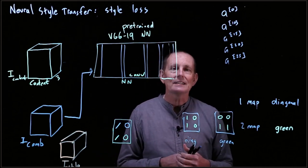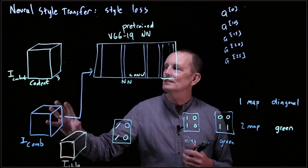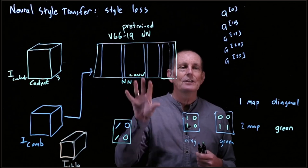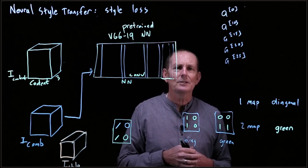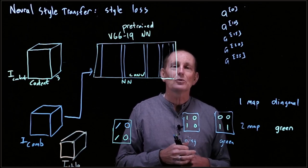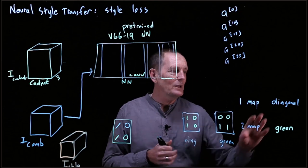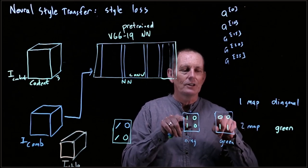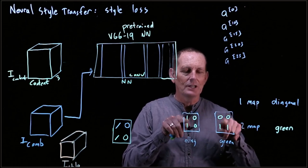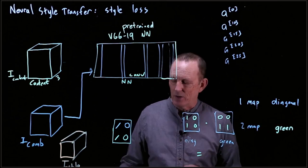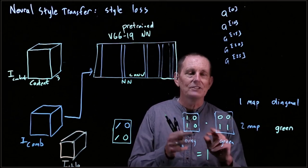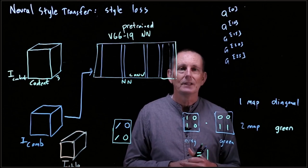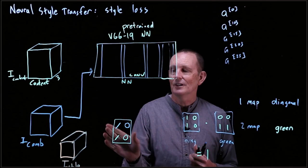For style, we don't care where in the image something happens — style occurs throughout the image. What we care about is when things co-occur. To find when diagonals and greens co-occur, we do a point-wise multiplication. If we do the dot product and get a value of four, that means all four areas have diagonal greens, indicating diagonal-greens are very important stylistically.